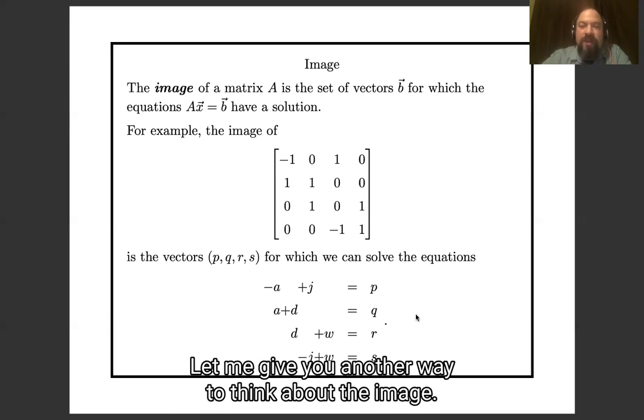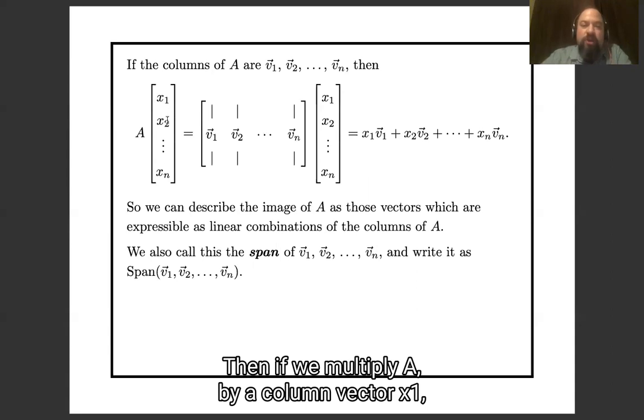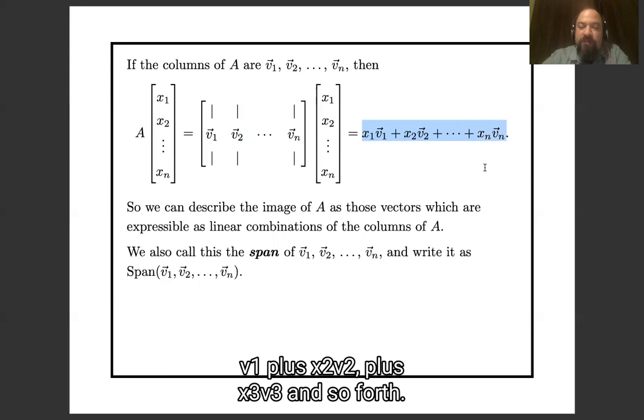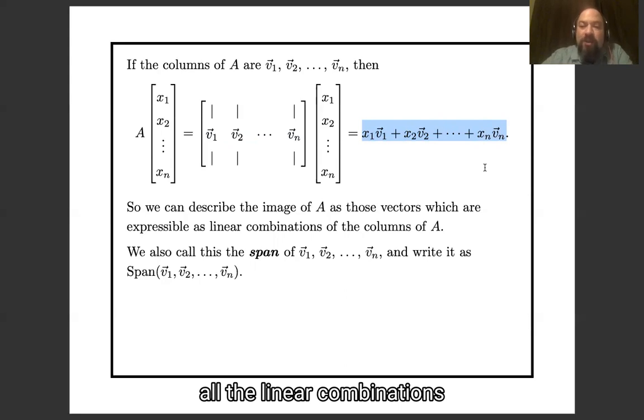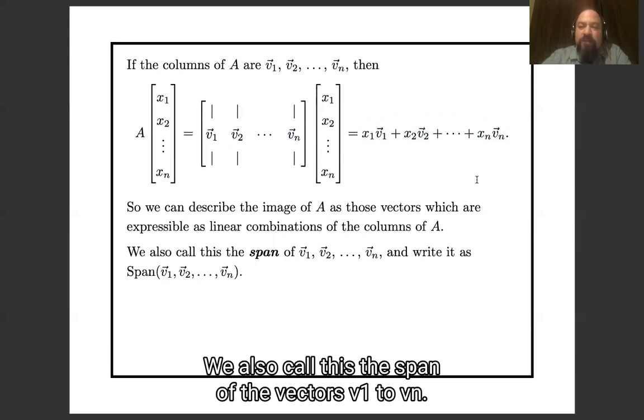Let me give you another way to think about the image. Let's give names to the columns of the matrix A, call the columns v1, v2, v3, and so forth. Then if we multiply A by a column vector, x1, x2, x3, and so forth, what we get is x1 v1 plus x2 v2 plus x3 v3 and so forth. So the image of A we can also describe as all the linear combinations like this of the columns of A. And I warned you there's going to be a lot of vocabulary. We also call this the span of the vectors v1 through vn.